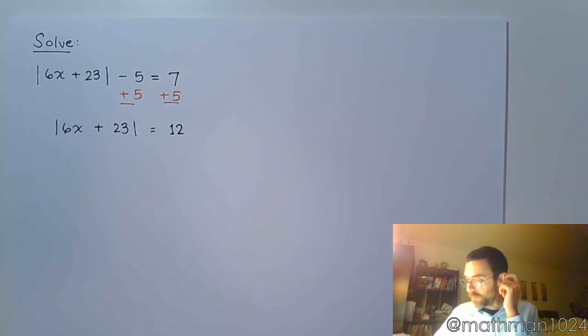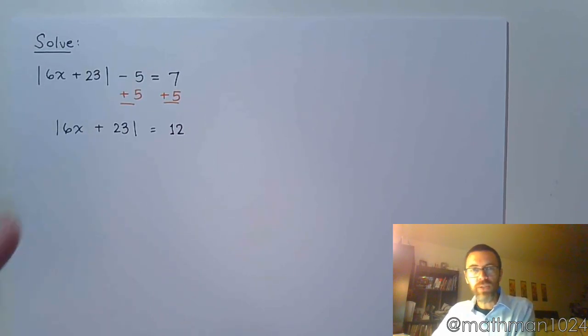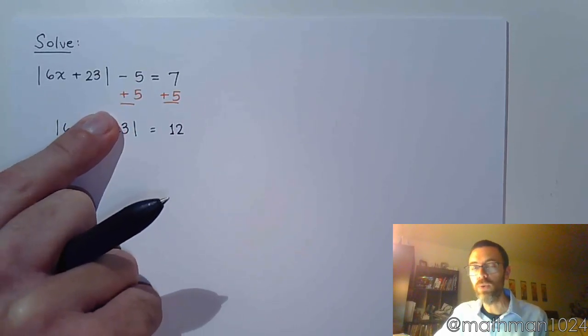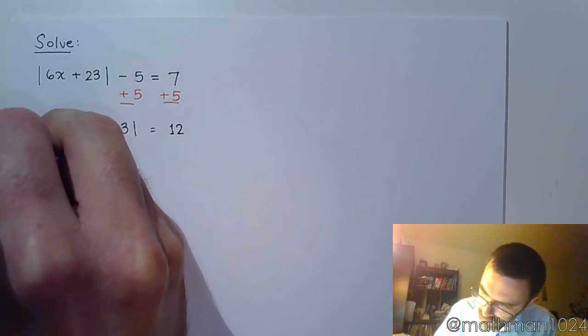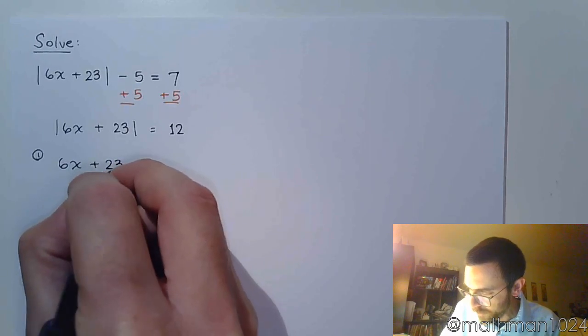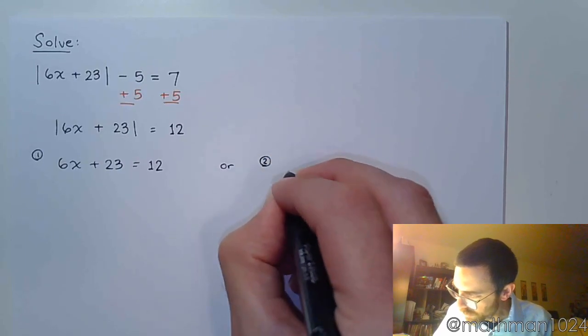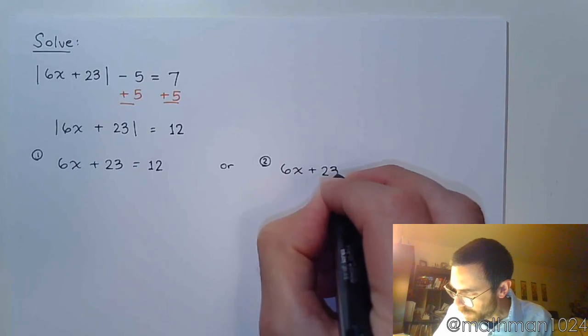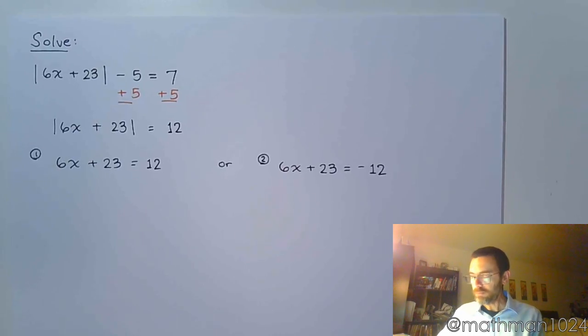Now when we talked about these before, getting the absolute value by itself equal to 12 means your distance from 0 needs to be 12. Well, how many numbers are 12 units away from 0? There are 2. 12 and negative 12. So as long as the expression inside here will equal 12 or negative 12, you're going to have a solution. So that tells us the two equations that we write and solve. The first one being 6x plus 23 is equal to 12. The second equation is 6x plus 23 equals negative 12.